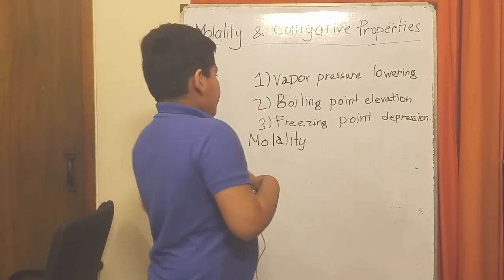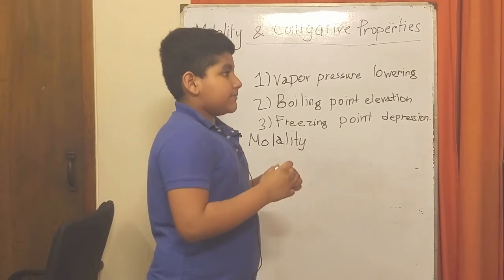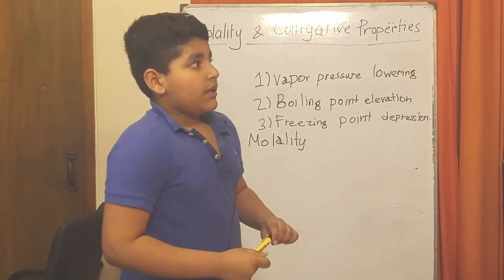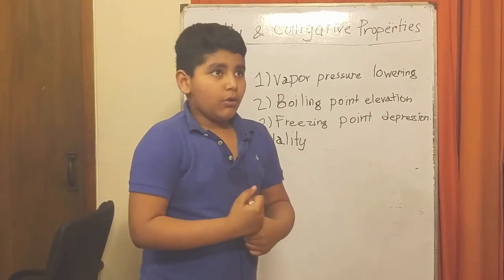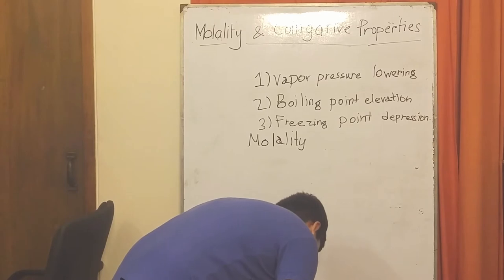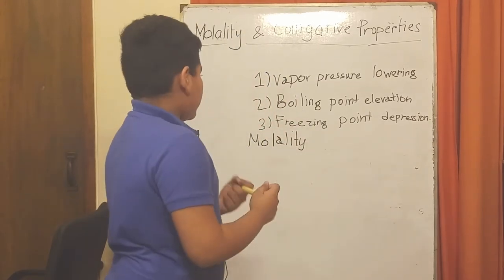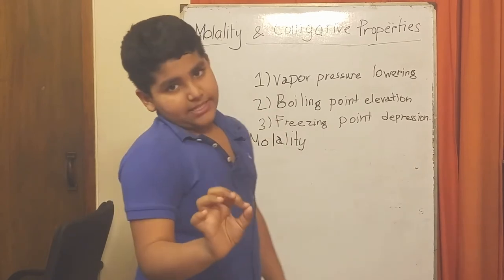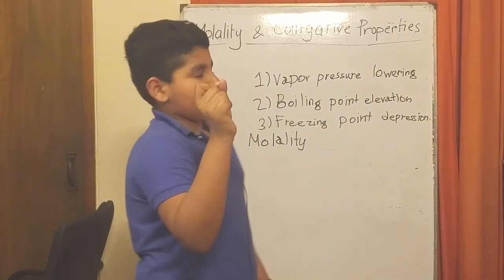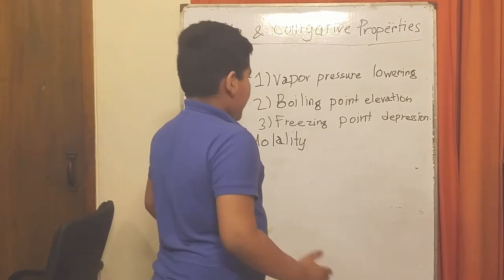As you saw on the phone, molality is the moles of the solute divided by kilograms of the solvent. It's basically moles per kilogram instead of moles per liter, which is molarity.